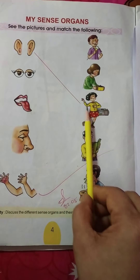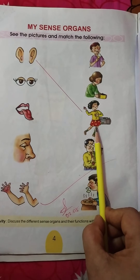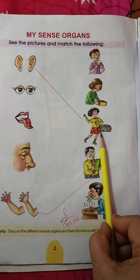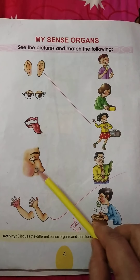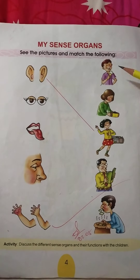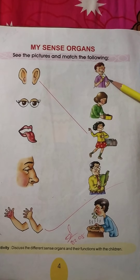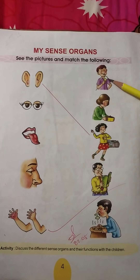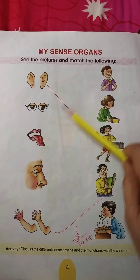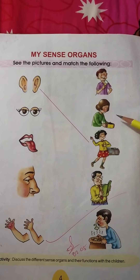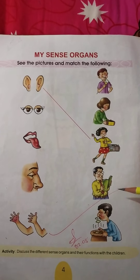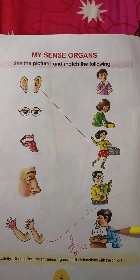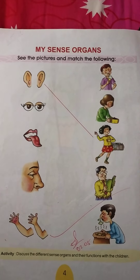Now on the basis of this you have to complete this exercise — see the picture and match the following. The first one is done for you: the girl is hearing music and she is dancing, so the answer is ear. Now you have to match eyes, tongue, nose, and hand. The boy is tasting the ice cream, the girl is holding something, the man is reading, and this man is smelling something. You have to complete this exercise. Thank you.